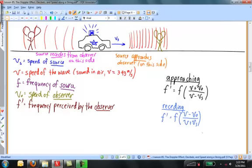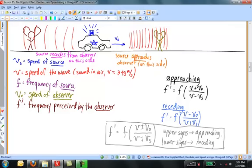Now for the receding case. If the source and the observer are getting farther and farther apart, no matter who's doing the moving, then F prime is equal to F times the quantity V minus V O divided by V plus V S. Now I'm going to write these two equations in a combined form. F prime is equal to F times the quantity V plus or minus V O divided by V minus or plus V S. We would use the upper signs for approaching, or the lower signs for receding.